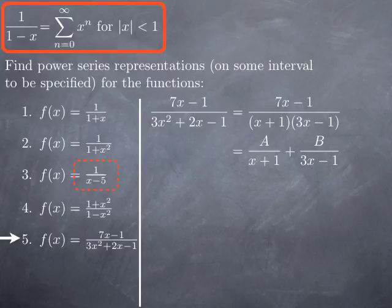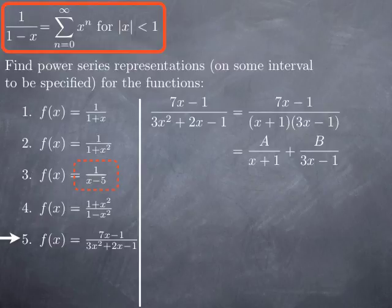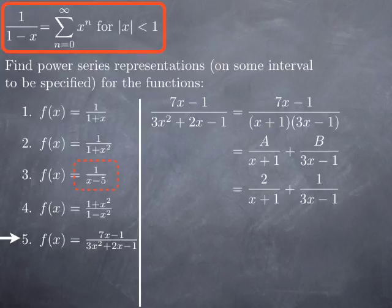To find A, we multiply by x plus 1 and set x equal to negative 1. On the right we get just A, and on the left the value of 7x minus 1 over 3x minus 1 at negative 1, which is negative 8 over negative 4, that's 2. So A is 2. To find B, we multiply by 3x minus 1 and set x equal to 1 third. On the left we get the value of 7x minus 1 over x plus 1 at 1 third: that's 7 thirds minus 1, which is 4 thirds, divided by 1 third plus 1, which is 4 thirds — so 4 thirds over 4 thirds is 1. So B is 1, and therefore we obtain 2 over x plus 1 plus 1 over 3x minus 1.